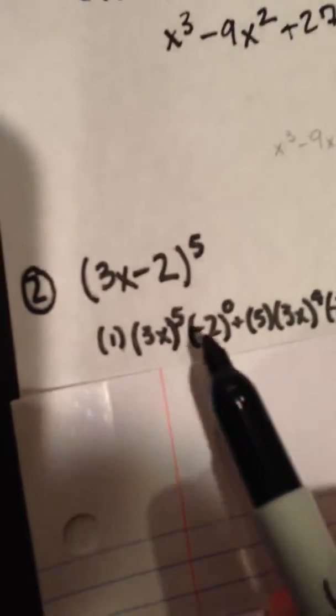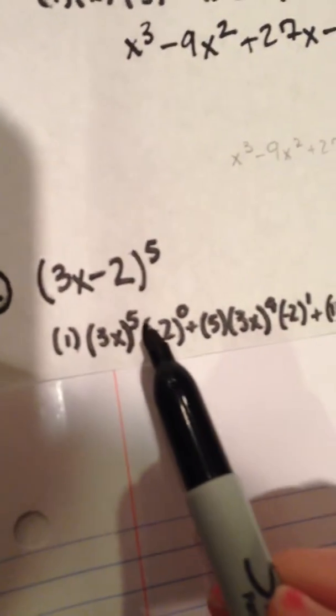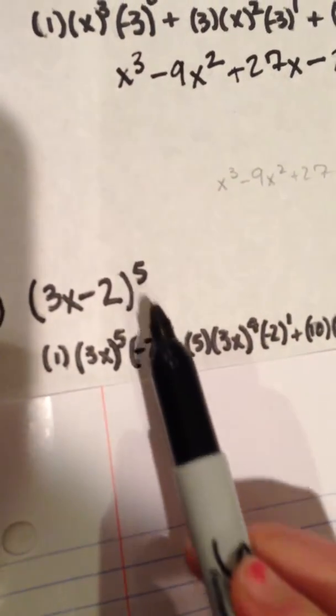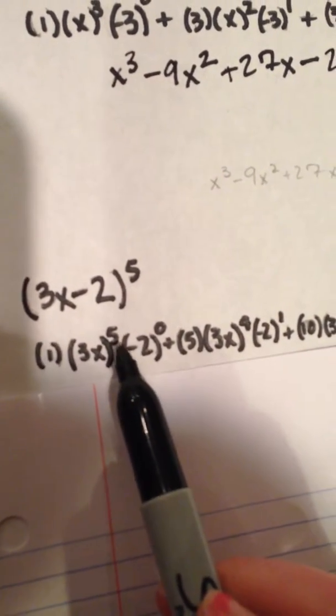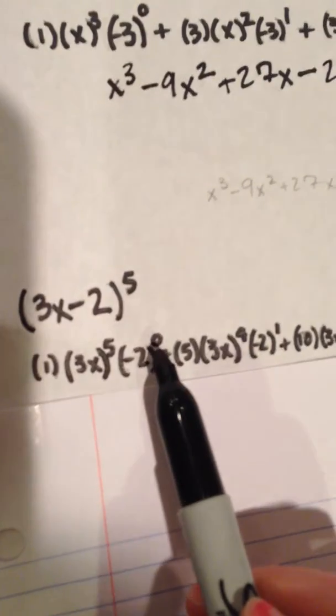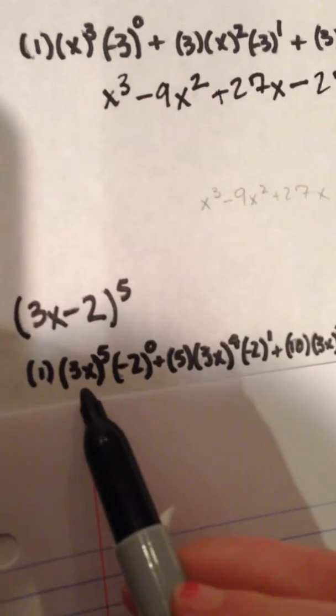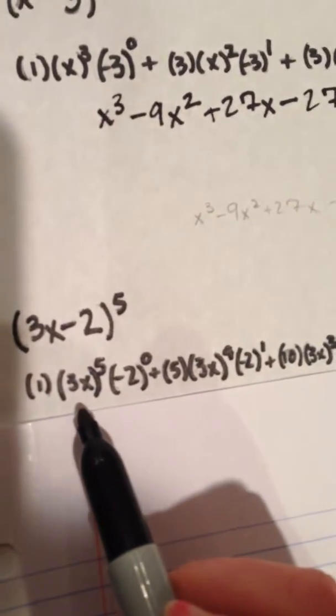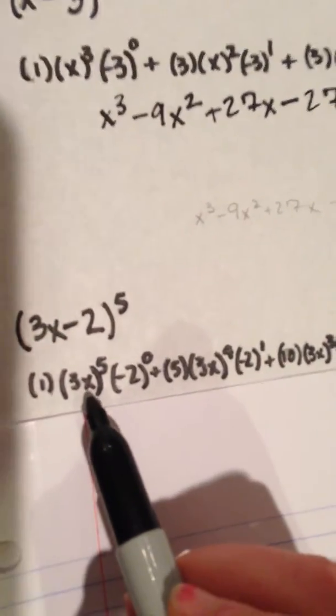So we have to start our first terms at five and zero powers because our exponent is five. So we'll be decreasing from five and increasing from zero as we go on. So our first term is 3x to the fifth power, which is 243x to the fifth power.